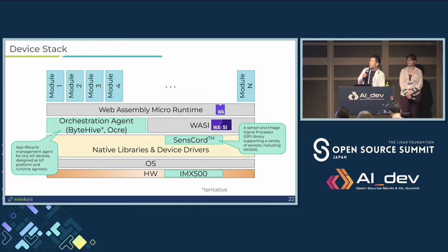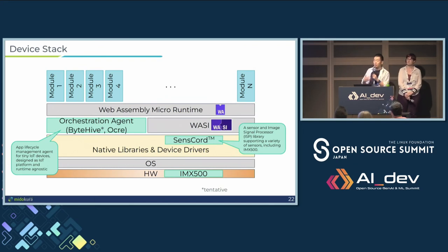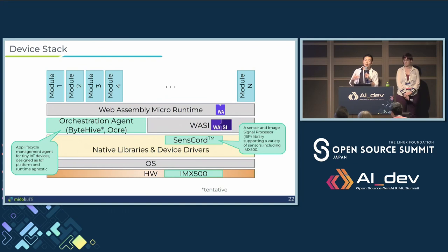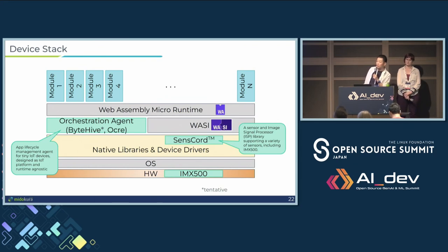What does it look like on a device stack? This is the software stack on a device. The modules on top are WebAssembly modules running on top of the runtime, which is WAMR. You also need an agent to orchestrate these modules — for deployment, status reporting, things like that. We have a couple of options: ByteHive, which is our open-source project (name is tentative), kind of like a kubelet for Kubernetes but born in IoT. Oker is another option — an LF Edge official project that became official a couple of months ago.